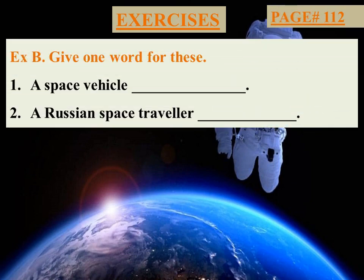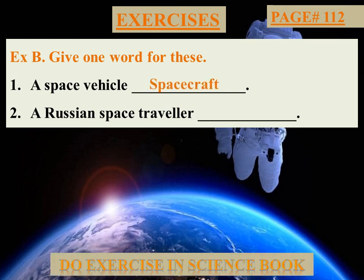Exercise B — Give one word for these. Number 1: A space vehicle — answer is 'spacecraft.' Space گاڑی کو spacecraft کہتے ہیں۔ Number 2: A Russian space traveller — answer is 'Yuri Gagarin.' Do the exercise in your Science Book.